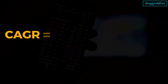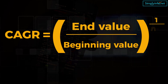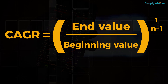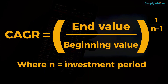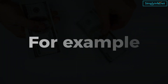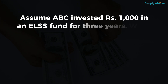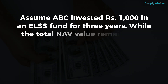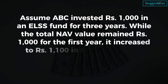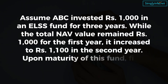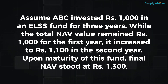CAGR is equal to end value divided by beginning value, to the power of 1 divided by n, minus 1, where n is equal to the investment period. For example, assume ABC invested rupees 1000 in an ELSS fund for three years. The total NAV value remained rupees 1000 for the first year, it increased to rupees 1100 in the second year.